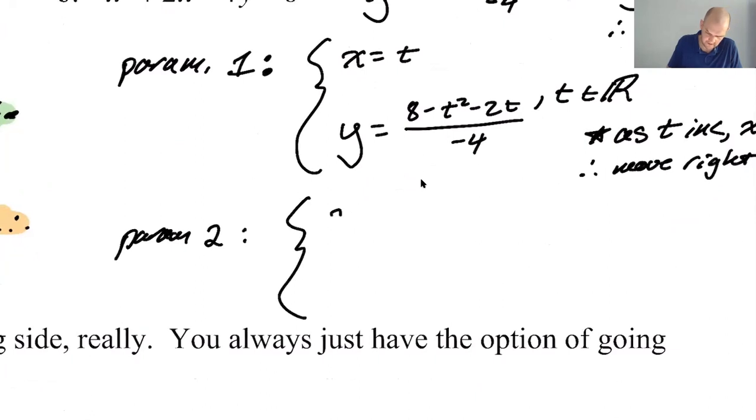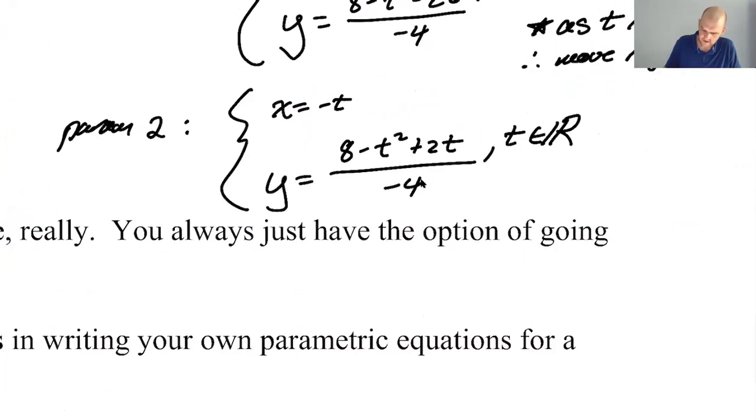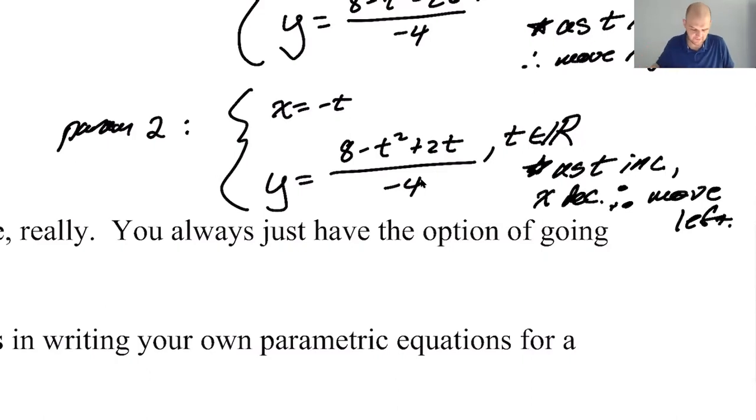We'll say that X is negative T. And so Y is going to be 8 and then negative T squared is just T squared again. Negative 2 times negative T is plus 2T over negative 4. Your life is definitely easier if you just distribute that negative. But I didn't. This time as T increases, what happens. As T increases, X decreases. So what are we doing? You're moving left. Because if X is decreasing, you're moving to the left.